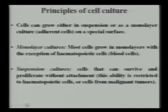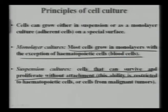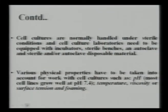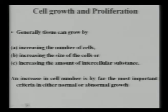Regarding principles of cell culture: cells can grow either in suspension or as a monolayer culture on special surfaces. Most cells grow in monolayers, with the exception of hematopoietic (blood) cells. Suspension culture is restricted to hematopoietic cells or cells from malignant tumors. Cell cultures are handled under sterile conditions requiring incubators, sterile benches, and autoclaves. Key physical properties include pH 7.4, temperature of 37°C, viscosity, surface tension, and foaming.